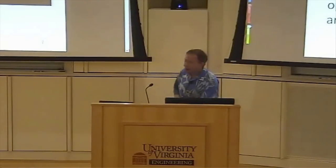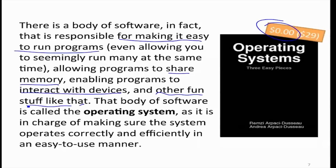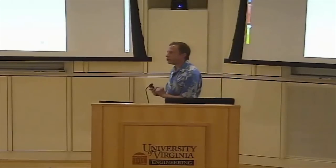The final definition I'll show you, from a book with certainly the right price, is that an operating system is software making it easy to run programs. That's also a big definition in terms of drawing the line on whether something is an operating system or not. But the real goal of the operating system is to be able to run other programs — for that you need to share memory, use devices, and do other things. I don't think any of these definitions is really ideal yet.